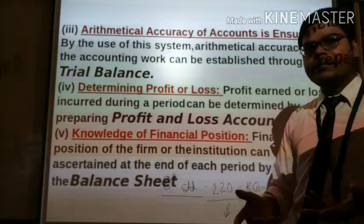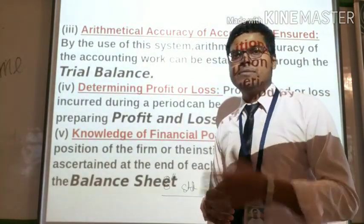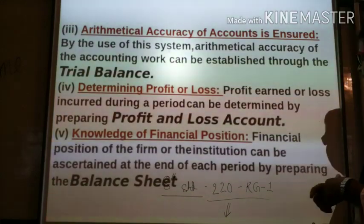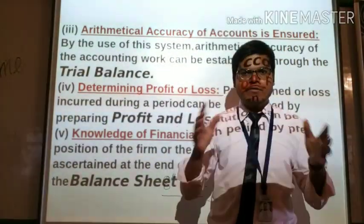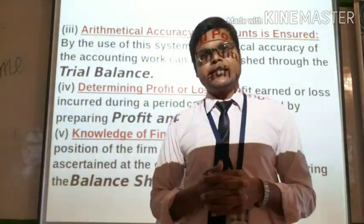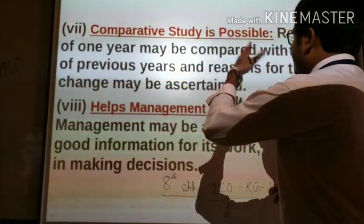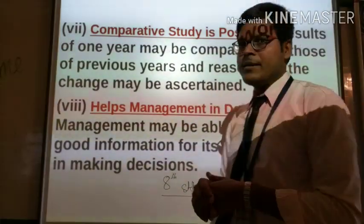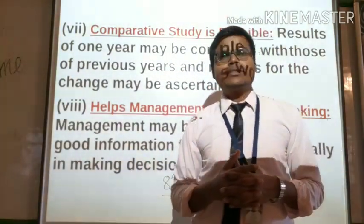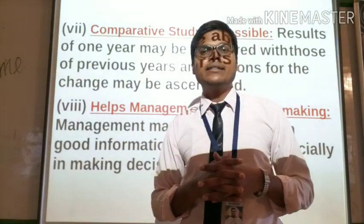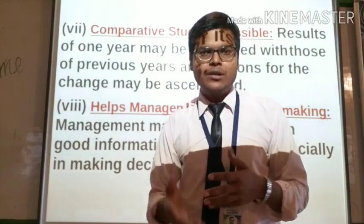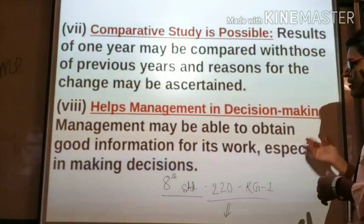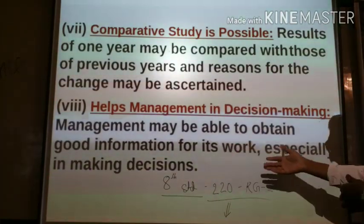Knowledge of financial position — by drawing a balance sheet, we know how to assess and improve our organization's financial position. The financial position of the firm can be ascertained at the end of each period by preparing the balance sheet. Next, comparative study is possible — results of one year may be compared with those of previous years and reasons for change may be ascertained. This helps management in decision making, as management may obtain good information, especially for making decisions.